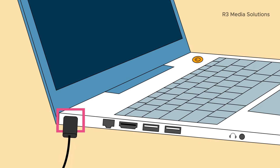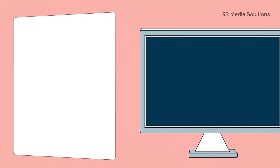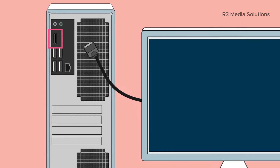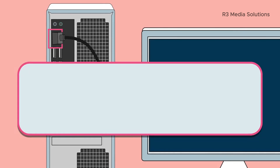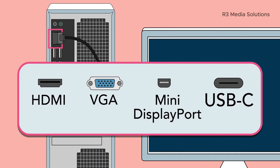If you have a desktop, you'll use the monitor port to connect the monitor. There are quite a few types of monitor connections, ranging from HDMI to the USB-C style we just mentioned.